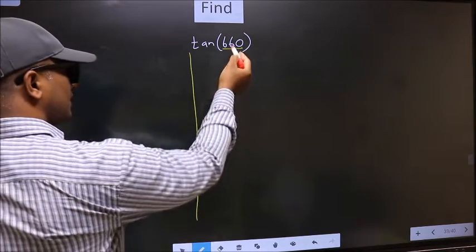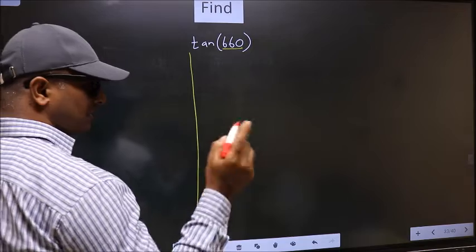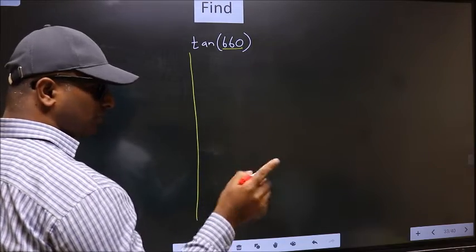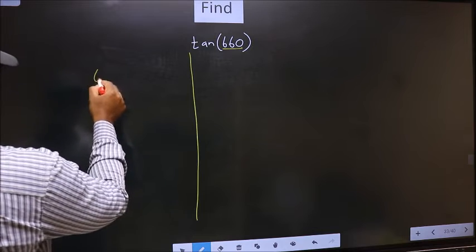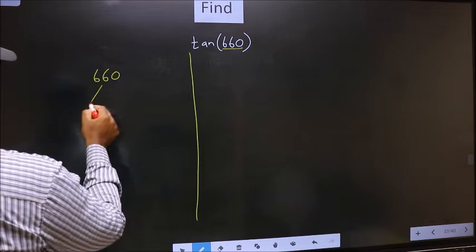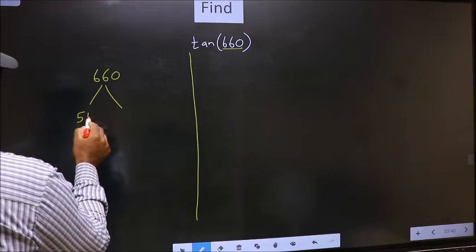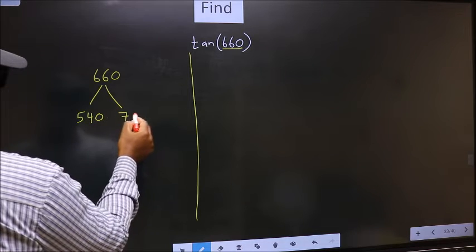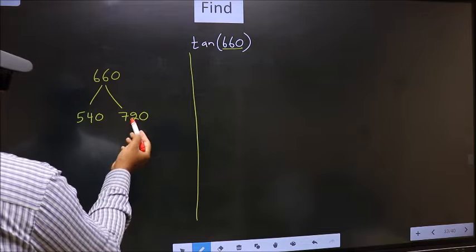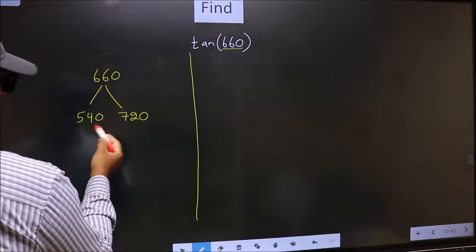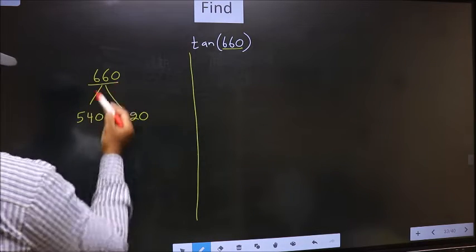Now we should check 660 lies between which two multiples of 180. What I mean is, 660 lies between 540 and 720. This is 180 times 3 and this is 180 times 4. Between these two numbers, 660 lies.